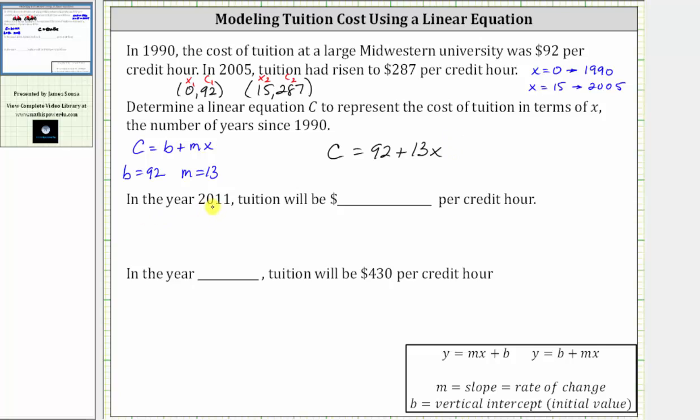Next, in the year 2011, the tuition will be how many dollars per credit hour? We need to determine which value of x represents 2011. X equals 2011 minus the base year of 1990, which equals 21. We substitute 21 for x into our equation.